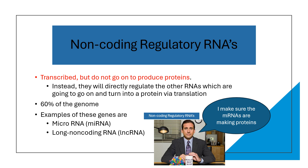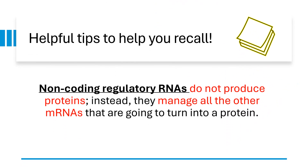Here are two examples. First, we have microRNA — tiny RNA molecules that play a big role in regulating gene expression by binding to other RNA molecules. Then we have long non-coding RNA: longer RNA molecules involved in various regulatory functions, influencing how genes are expressed. In summary, while most genes go on to produce proteins, these special RNAs focus on regulating the processes, ensuring everything runs smoothly. Non-coding regulatory RNAs do not produce proteins; instead, they manage all the other mRNAs that are going to turn into a protein.